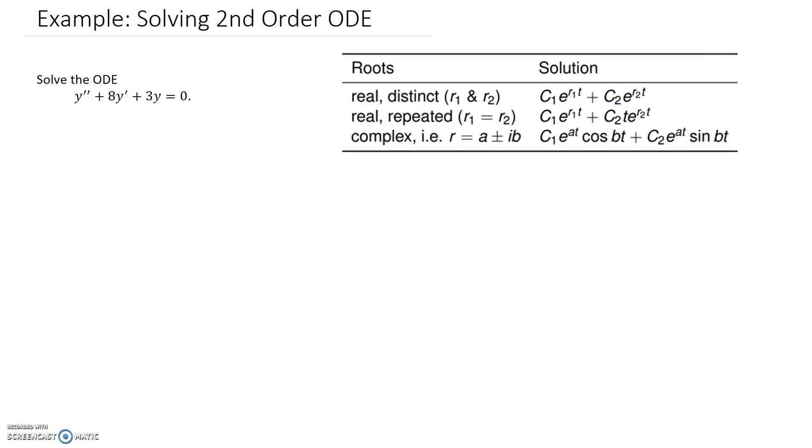So here we're asked to solve the differential equation y'' + 8y' + 3y = 0. We can see straight away that this is a second order equation from the second derivative present, and this is a constant coefficient equation because all of these terms on the left hand side just have a number sitting at the front: 1, 8, and 3.